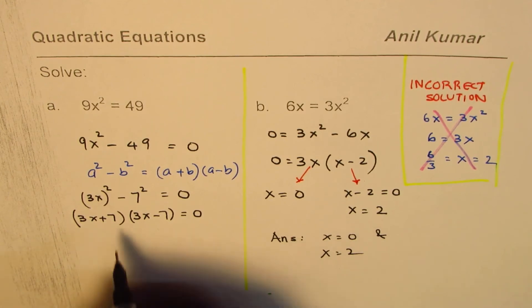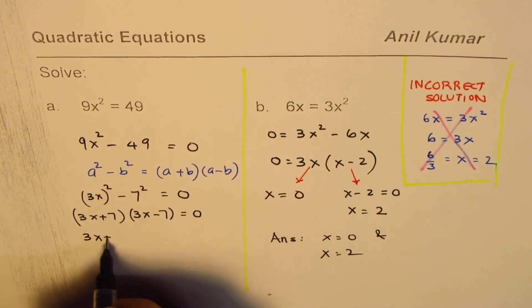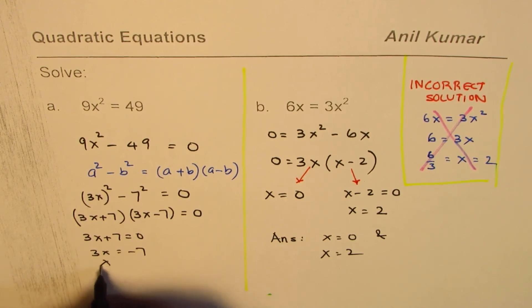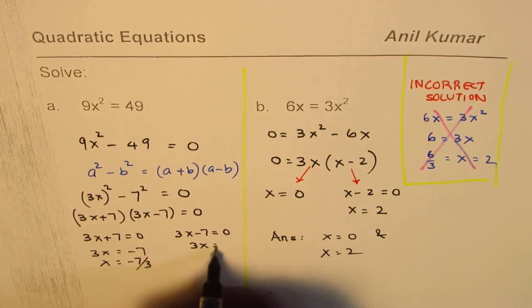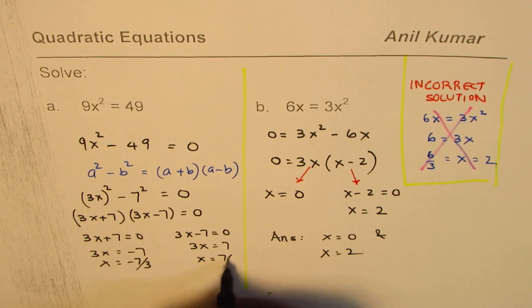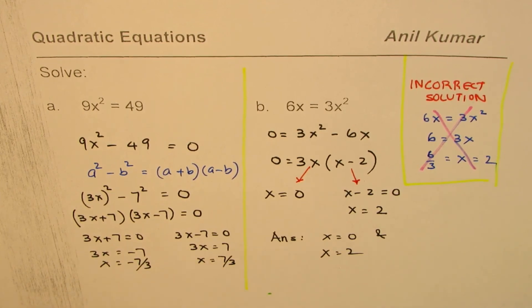That gives you two solutions. One of them is 3x plus 7 equals to 0, that is 3x equals to minus 7, x equals to minus 7 over 3. The other one is 3x minus 7 equals to 0, that is 3x equals to 7, x equals to 7 over 3.